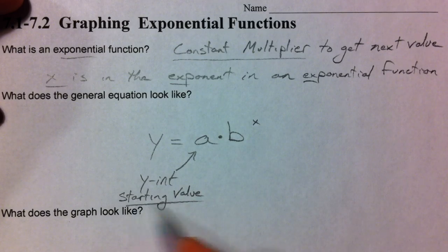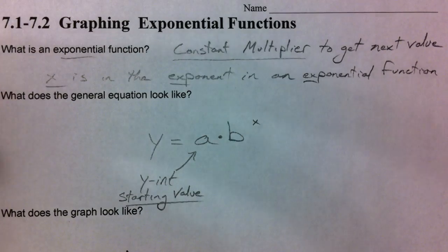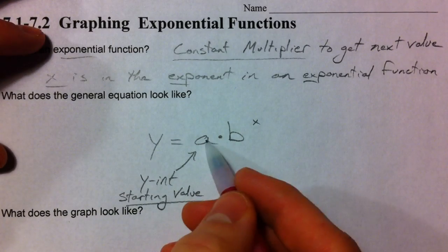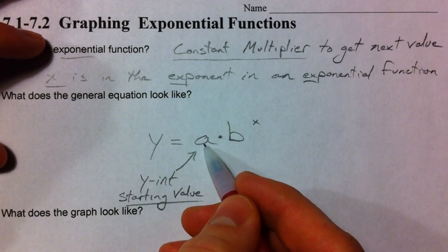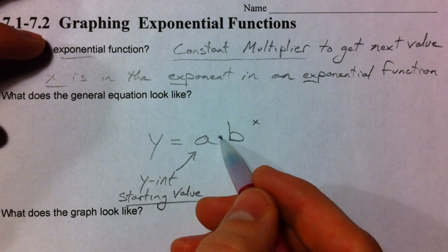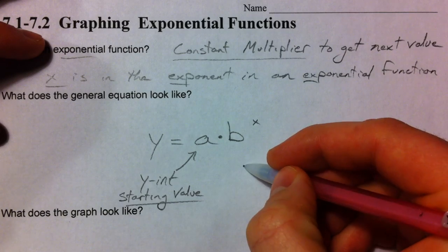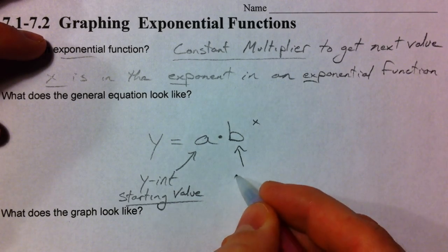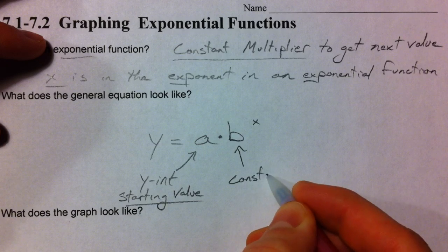And what I mean by that is, if we're dealing with exponential decay, that's going to be the amount of grams that you have at the beginning. This is going to be the amount of money that you put into the bank before it starts to grow. This is the amount that your car is worth before it starts decreasing in value. And then b here is going to be your constant multiplier.